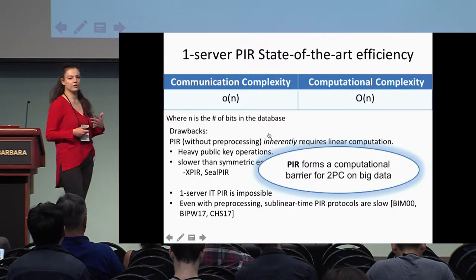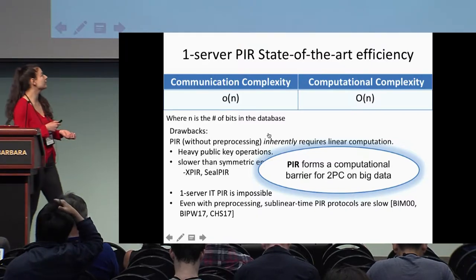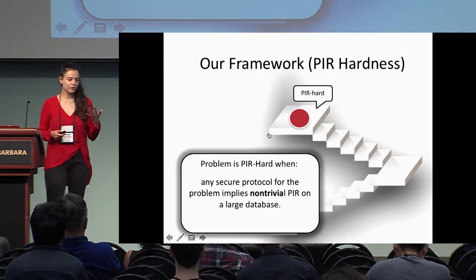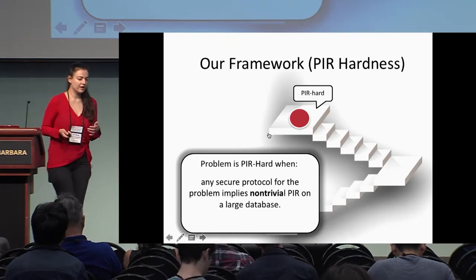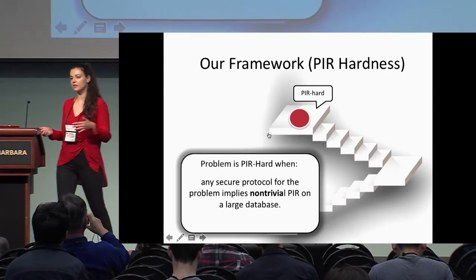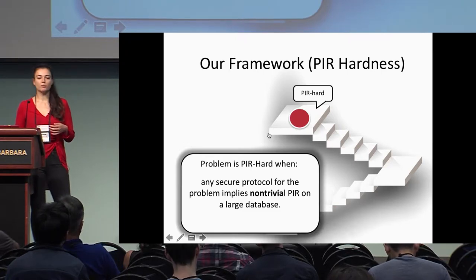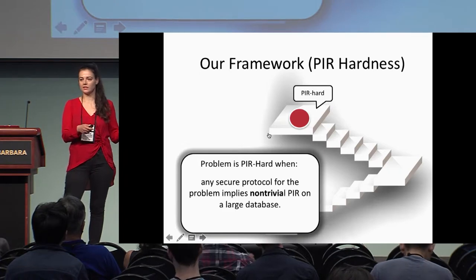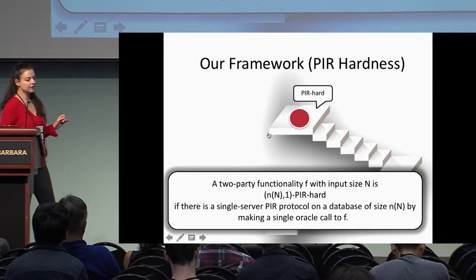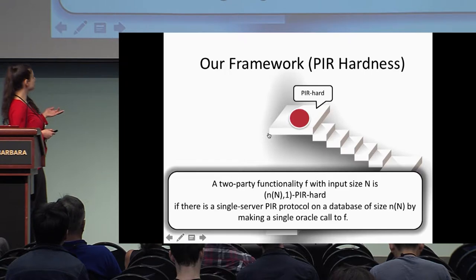Given the current state of affairs, PIR is really the measure that can capture the hardness of 2PC protocols. Because if a protocol reduces to PIR, it really means it's going to have linear computational complexity, even given pre-processing. This brings me to our framework: we define PIR-hardness. A problem is PIR-hard if any secure protocol for this problem implies a non-trivial PIR on a large database, where non-trivial means sublinear communication complexity.